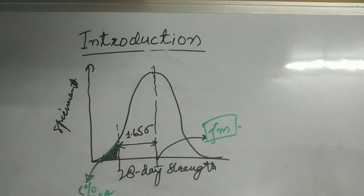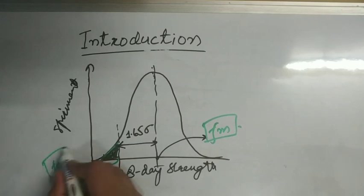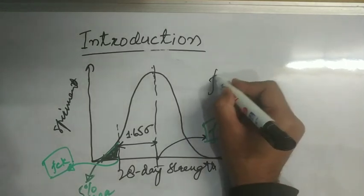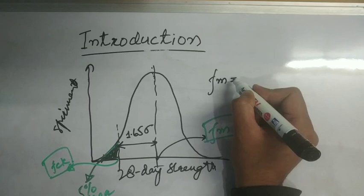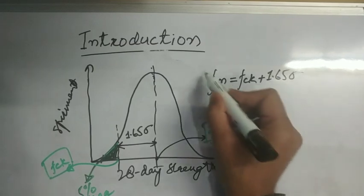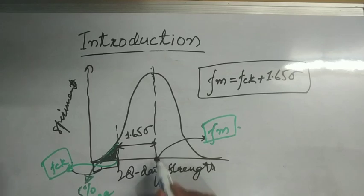From the above diagram, we can calculate the relation between target mean strength and characteristic strength. This was our target mean strength and this portion is FCK or characteristic strength. So from this graph, we come to a relation as Fm, that is target mean strength, equals FCK characteristic strength plus 1.65 sigma. This portion is FCK and this is 1.65 sigma.